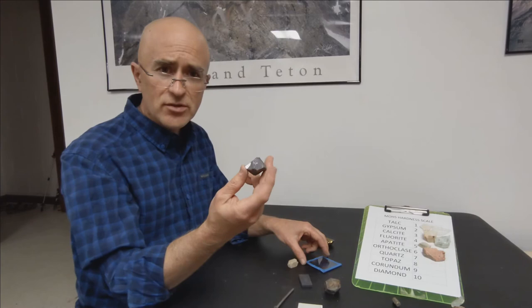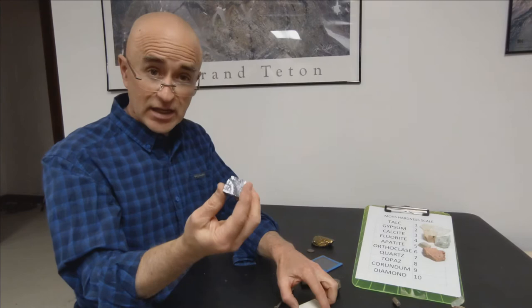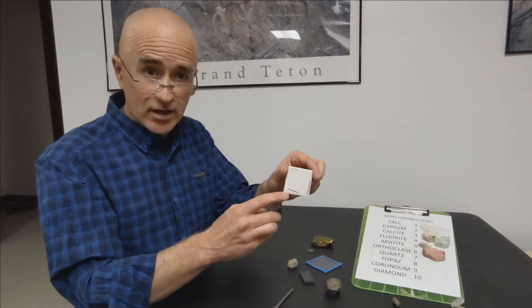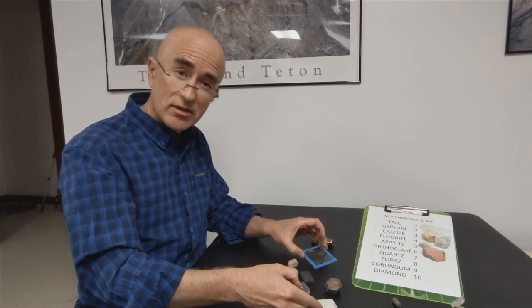Let's try another one. Here's a rather unique shiny metallic mineral. I'm going to take it to the streak plate and rub it on the streak plate. Get a nice rich black streak. So it's softer than the streak plate.